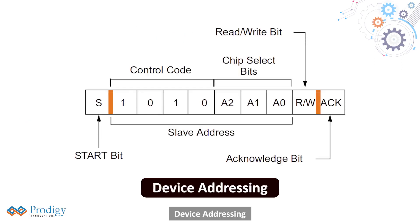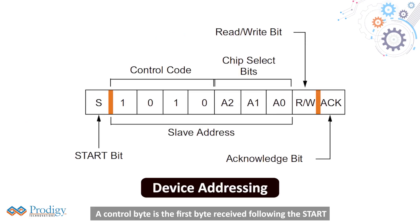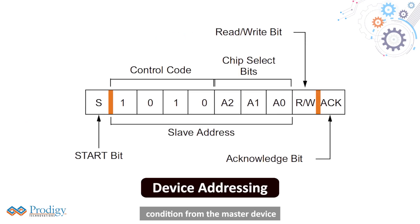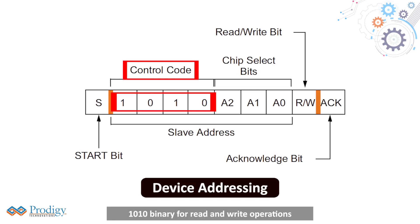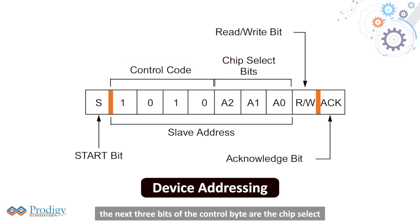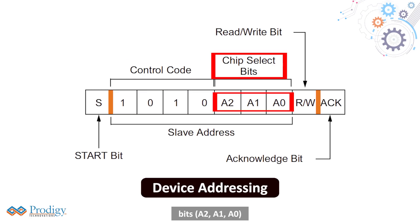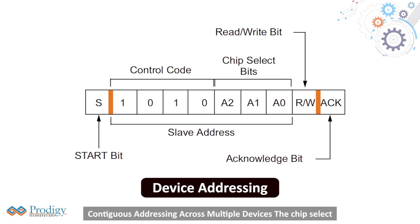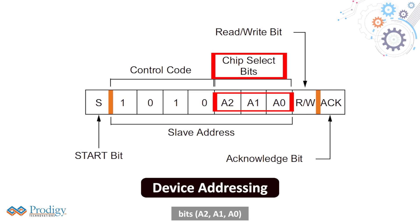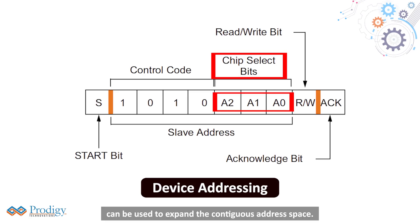Device addressing: a control byte is the first byte received following the start condition from the master device. The control byte consists of a 4-bit control code — 1010 binary — for read and write operations. The next 3 bits of the control byte are the chip select bits A2, A1, A0. These chip select bits can be used to expand the contiguous address space across multiple devices.